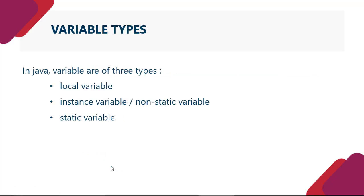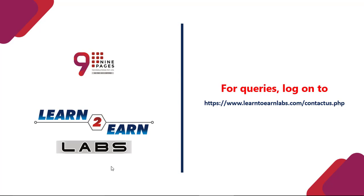In Java, variables are of three types. Java mein teen tarah ke variable hote hain - first one is the local variable, second is instance variable and third is static variable. Jo instance variable hote hain, unhe hum non-static variable bhi kehte hain. Yeh theoretical part tha, hope aapko cheezein samajh mein aayi hongi. Next tutorial se hum programming par work karenge, jismein hum variables ke upar work karenge. Agar aapki koi query hai, to aap log on kar sakte hain www.learntoearnlabs.com/contactus.php. Hum aapki query ko solve karne ki koshish karenge. Thank you.